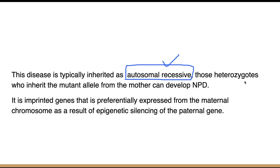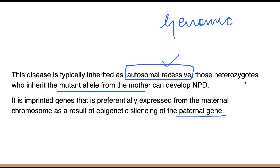However, sometimes heterozygotes can also develop this disease if they inherit the mutant allele from the mother due to genomic imprinting. Because of genomic imprinting, the paternal gene is silenced and only the maternal chromosome expresses this gene. If that maternal chromosome is mutated, the heterozygous person can also develop Niemann's Pick disease. Mostly it is autosomal recessive.